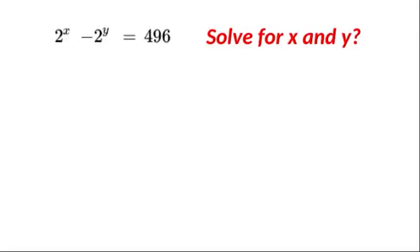Hello and welcome back to the channel. Today we have an interesting equation. We have 2 to the power of x minus 2 to the power of y is equal to 496, and we have to solve for x and y.